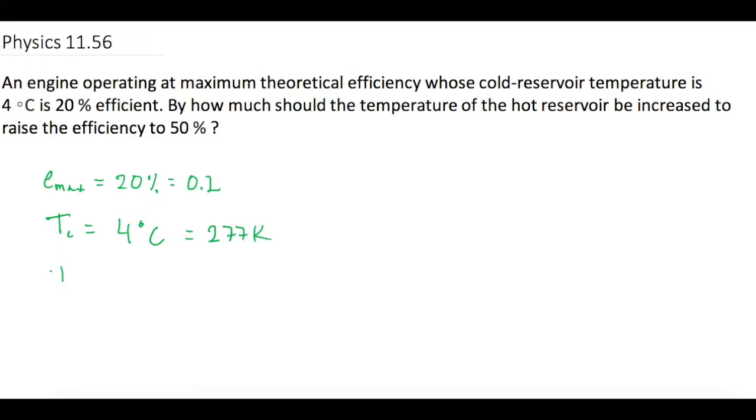Alright, then we don't know what our initial Th is. So let's use Emax is equal to 1 minus Tc over Th. And now let's solve for what Th is to figure out what our initial Th is in this case. So we will subtract 1 from both sides. So now we get Emax minus 1 is equal to a negative Tc over Th.